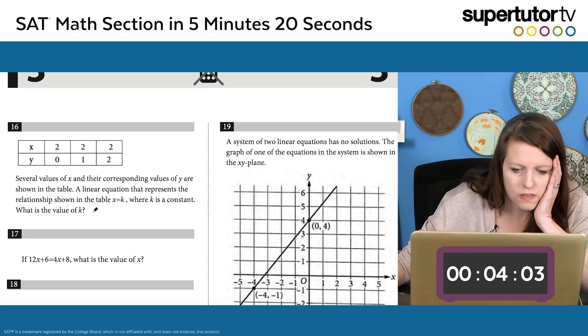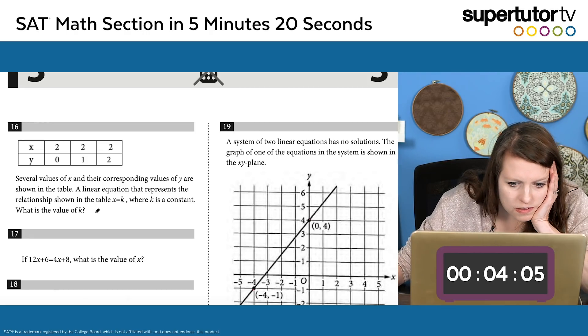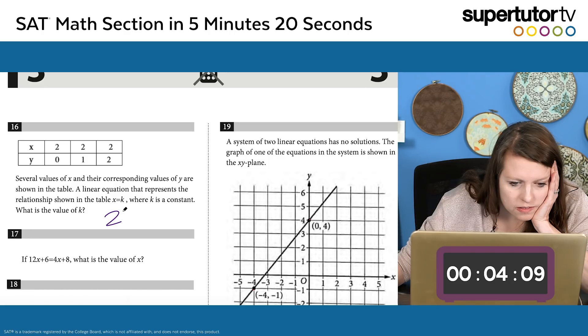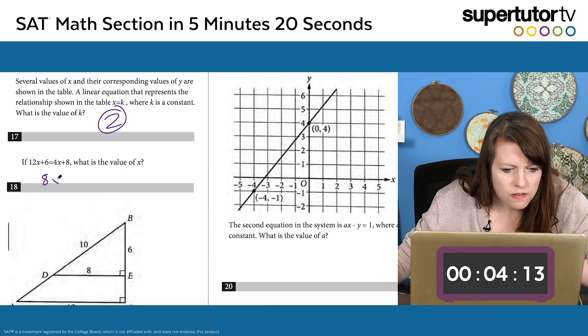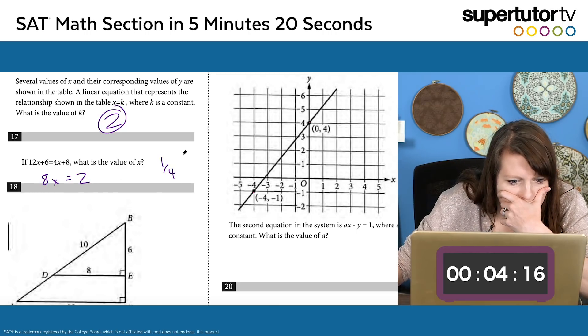Okay, whew. All right, here it says there's several values, a linear value that represents the relationship is shown where x equals k. I'm really looking for the equation here. So if x equals k, where k is a constant, what is the value of k? Well, the constant is obviously 2, because 2 repeats multiple times. It's got to be 2. Okay, here we have this equation. I'm going to subtract 4x. I get 8x equals 2. What is the value of x? One fourth.